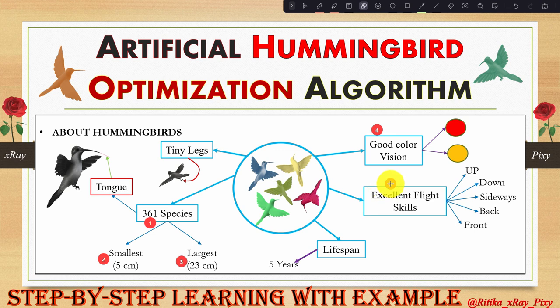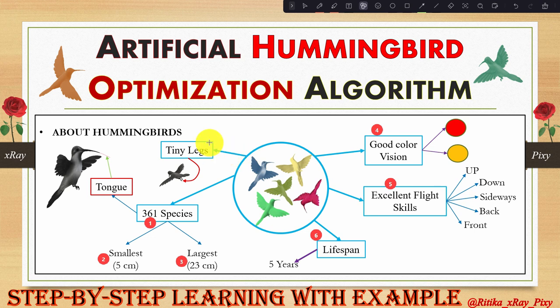Hummingbirds have excellent flight skills compared to any other birds. They are able to fly not only forward but also backward, up, down, and sideways. Hummingbirds have an average lifespan of 5 years, have tiny legs, cannot walk or jump, and can fly at 20 to 30 miles per hour.